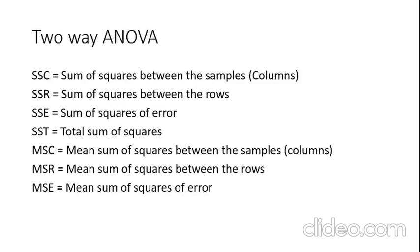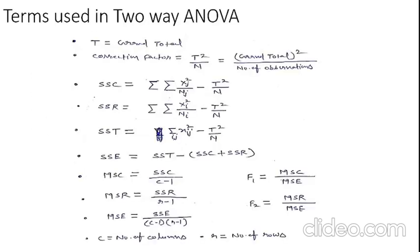SSE is the sum of squares of error. SST is the total sum of squares. MSC is the mean sum of squares between the samples. MSR is the mean sum of the squares between the rows. MSE is the mean sum of square of error.